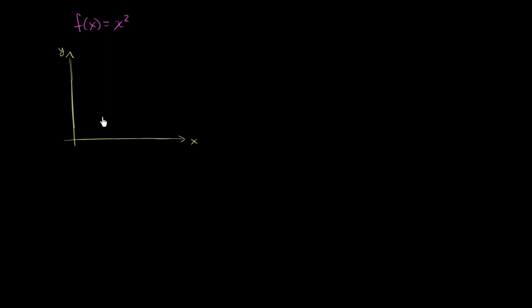And then let me draw my function. My function looks like this, at least in the first quadrant. That's where I'll graph it for now. I could also graph it in the second quadrant. But what I care about is the area under this curve and above the positive x-axis between x equals 1 and x equals 4.